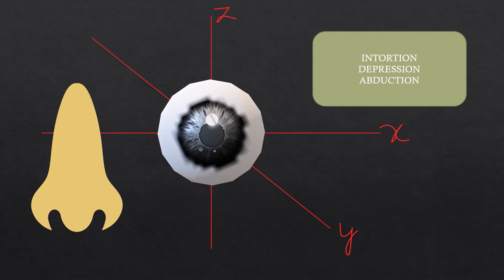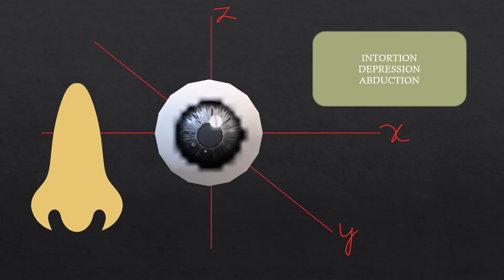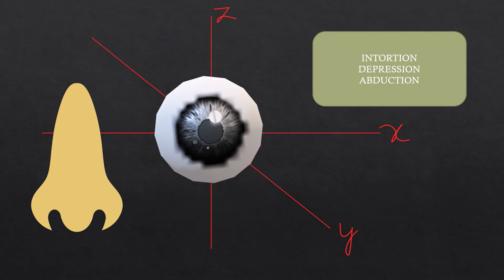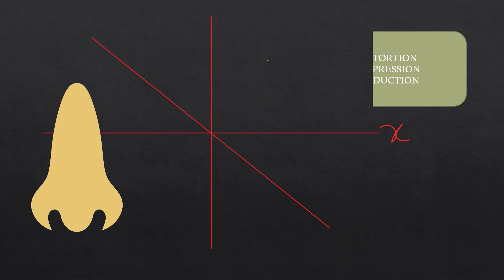The primary action of the superior oblique muscle is intorsion — the rotation of the eyeball toward the inside, in the anti-clockwise direction. The secondary action is depression — downward movement of the eyeball. The tertiary action, common between the superior oblique and inferior oblique, is abduction — the outward rotation of the eyeball.